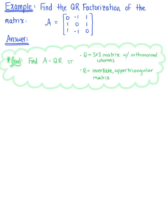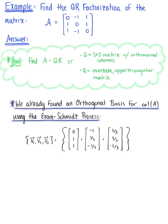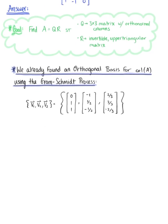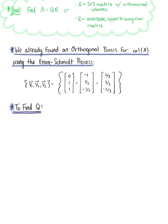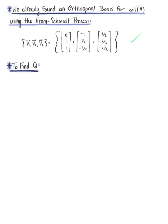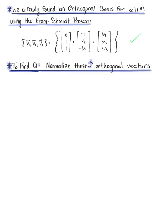Hopefully this matrix looks familiar. We can recall that in a previous example, we found an orthogonal basis for the column space of this matrix using the Gram-Schmidt process. We can use this orthogonal basis for the column space of matrix A to find matrix Q. Since this is already an orthogonal basis, all we need to do is normalize these orthogonal vectors.